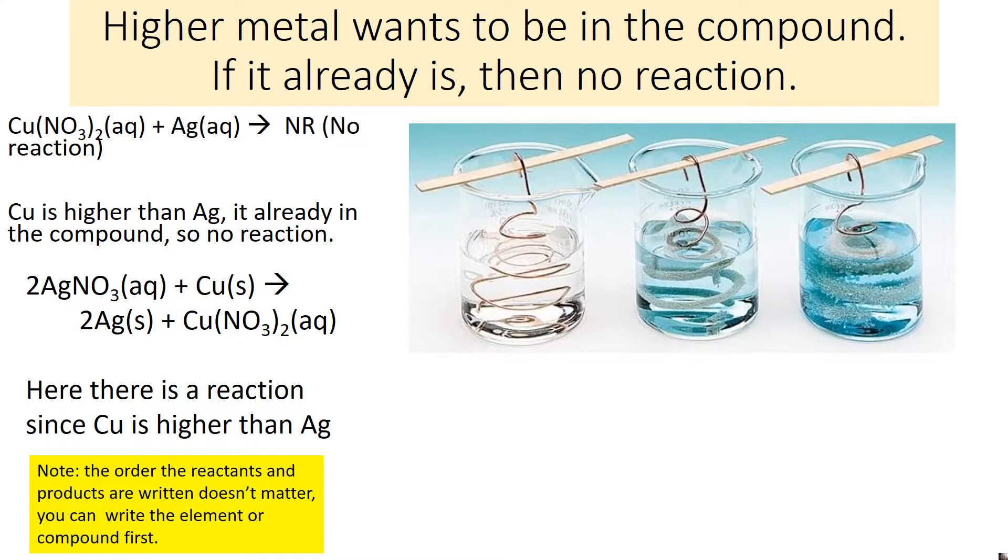The thing to remember is the higher metal wants to be in the compound. If it already is, there's no reaction. When we have copper in a compound with silver by itself, copper is higher, so there's no reaction – it's already in the compound. But if we have silver in the compound and copper by itself, copper is higher and doesn't want to be by itself. So that's when they switch and you do have a reaction. With this one, you get copper nitrate and silver as a solid. I put these pictures up here to show you what that looks like.